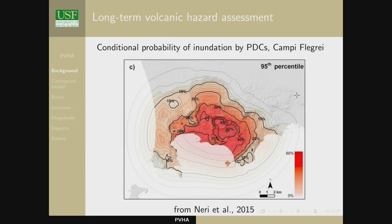This is the marriage of a conceptual model of how the volcano works with a numerical model forecasting PDC run-out — in this case a highly simplified numerical model, because they needed to run it tens of thousands of times to make that map. This is also doubly stochastic, and you can see the 95th percentile in the corner. Different people had different ideas about the probability distribution for eruption magnitude, and this is the most conservative map.